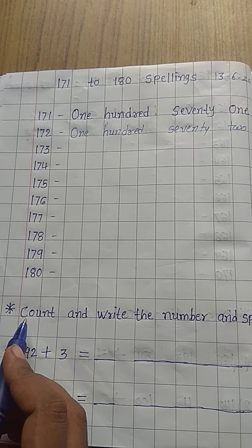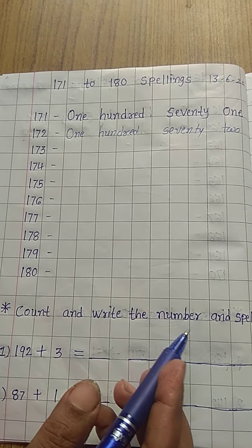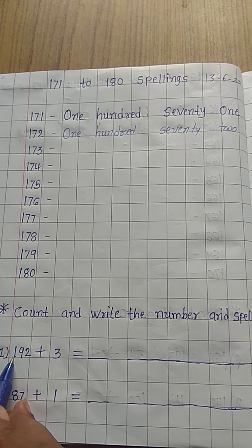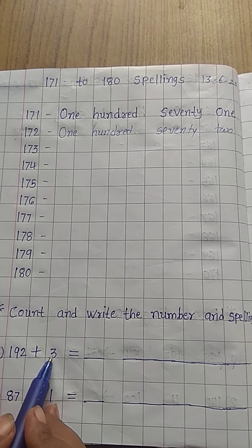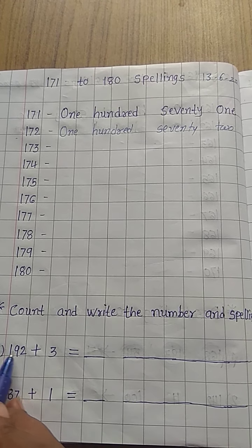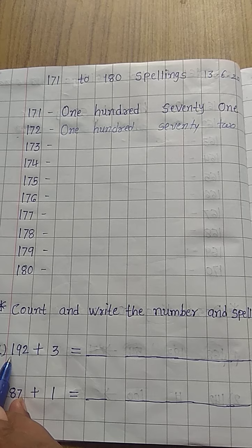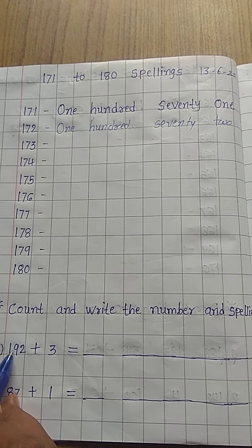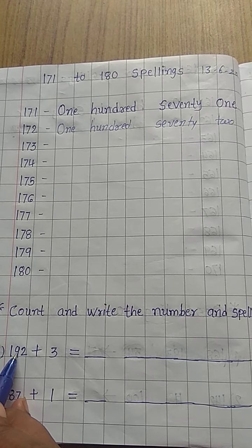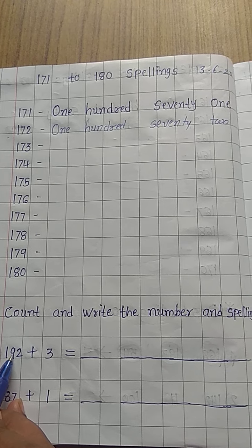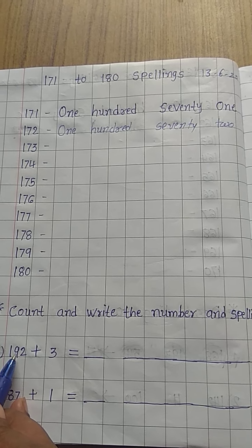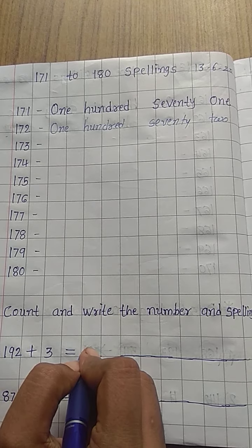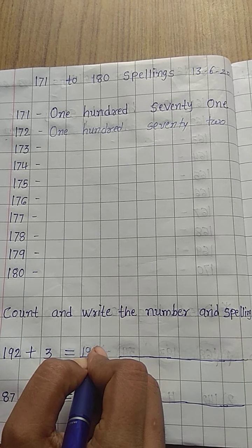Next exercise: count and write the number and spellings. Here given 192 plus 3. So 192 is in your mind and 3 on your fingers. Count after 192: 193, 194, 195. So write the number 195.